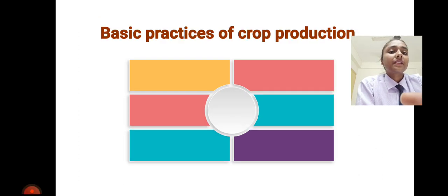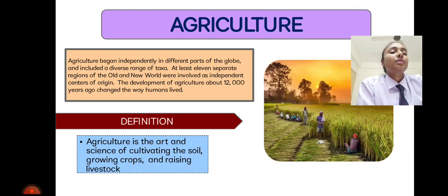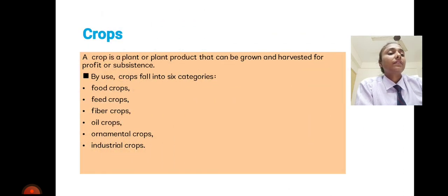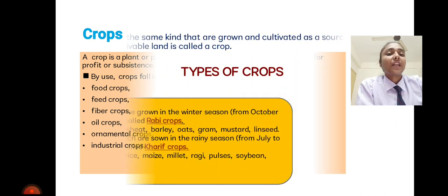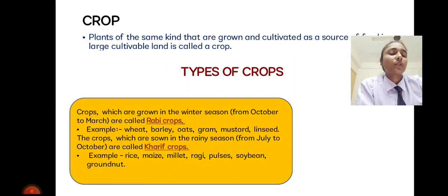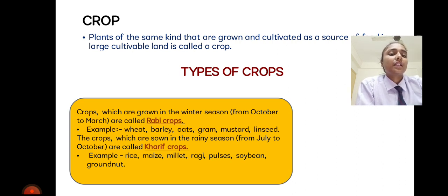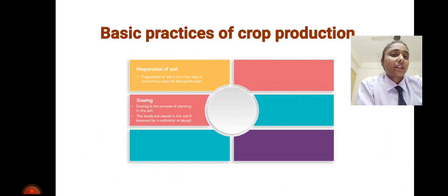Today we have discussed agriculture and its definition. We discussed crops, which fall into six categories on the basis of use: food crop, feed crop, fiber crop, oil crop, ornamental crop, and industrial crop. We also studied the types of crops and the definition of crops. There are two types: Rabi crop and Kharif crop. Rabi crop is also known as winter crop, and Kharif crop is also known as rainy season crop.